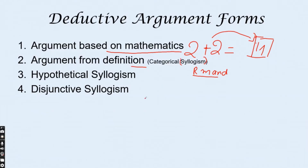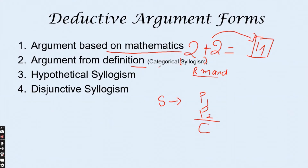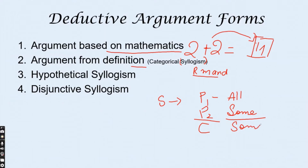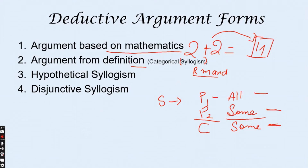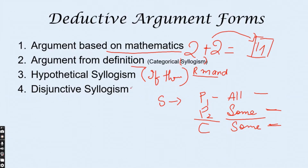Syllogism is another important deductive form — it has two premises and one conclusion. A categorical syllogism uses terms like 'all' or 'some,' for example 'all men are mortal.' A hypothetical syllogism uses 'if-then' conditional statements. A disjunctive syllogism uses 'either-or' constructions.